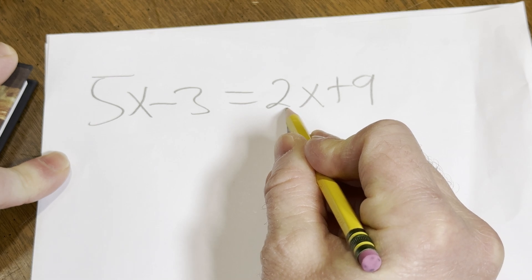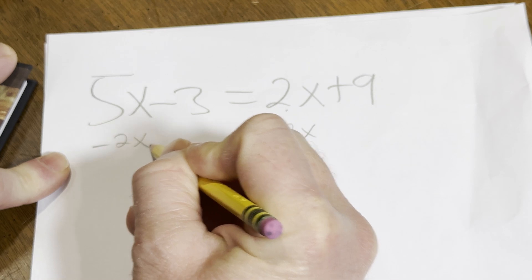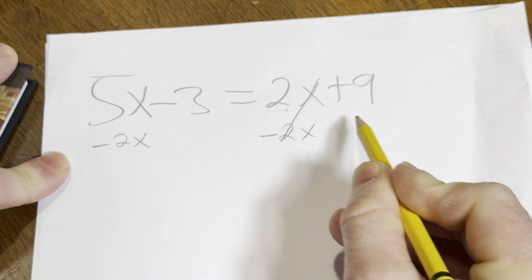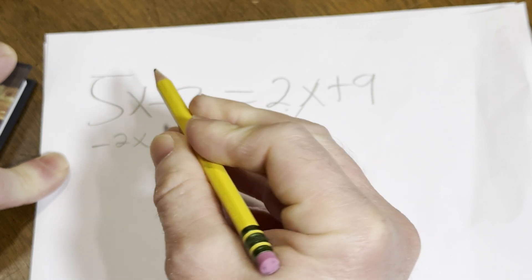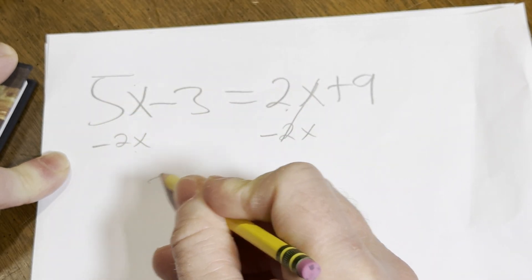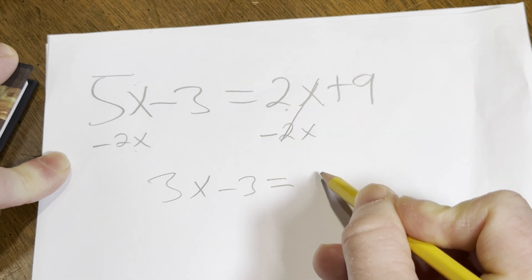I'm going to start by taking this 2x and subtracting it over. So I'm going to subtract 2x from both sides like this. And you can just go ahead and add the 3 at the same time if you want to. 5x minus 2x is 3x. We still have the minus 3. And then here we're left with a 9.